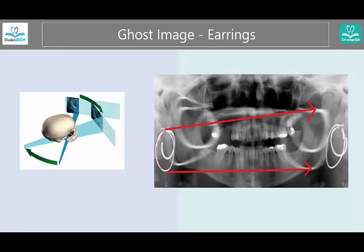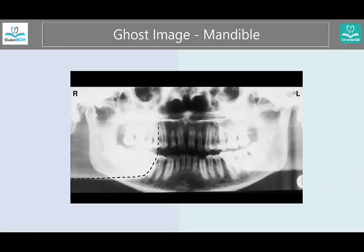Here you have the real earring and this is the big ghost image — again higher up, blurry, and on the opposite side. This hoop earring is a little different because it's taken from many different angles, so sometimes it might not look like an earring. It might look like a straight line depending on the angle.